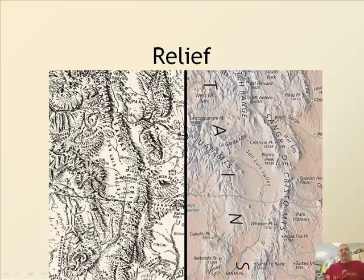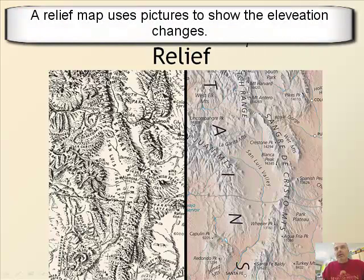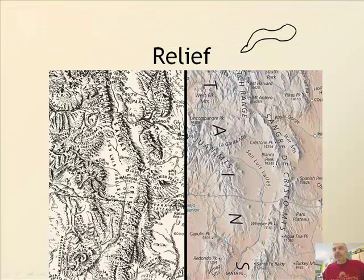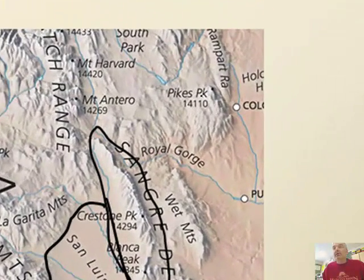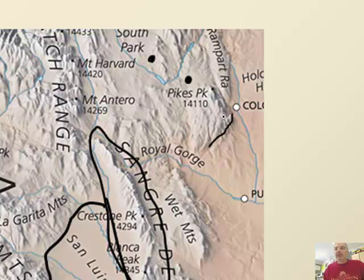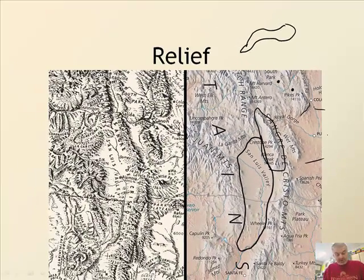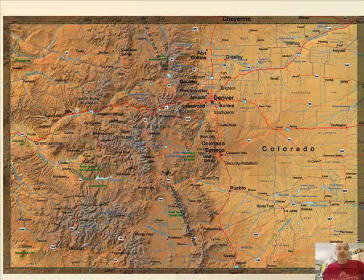Now let's talk about relief maps. Instead of contour lines, relief maps show you a picture of the mountains themselves. Looking at this map, you can see the San Luis Valley, down near Alamosa, this big valley, and here's Pikes Peak. Relief maps are really useful because they help you visualize the terrain — Colorado Springs looks kind of flat because you don't see the bumps.